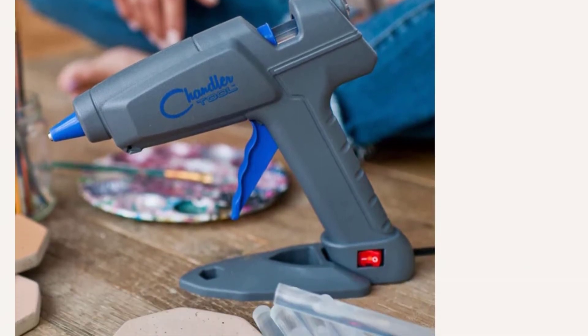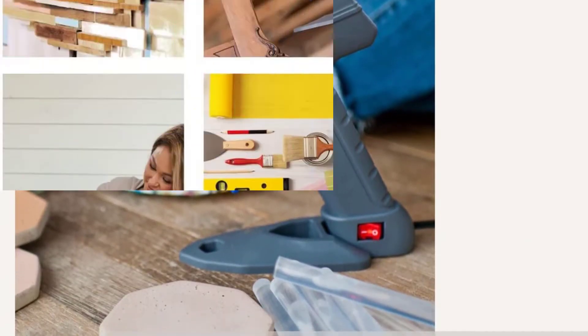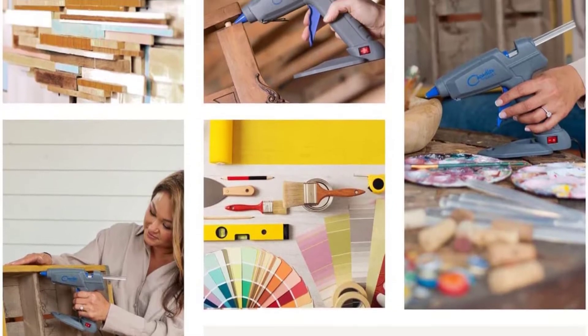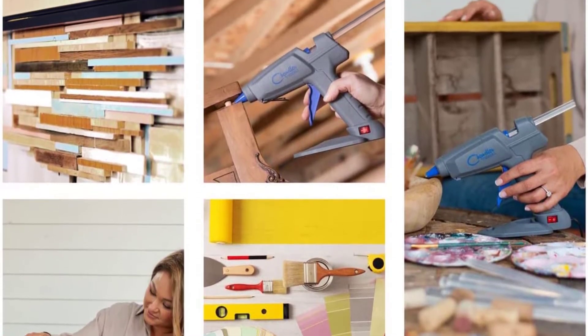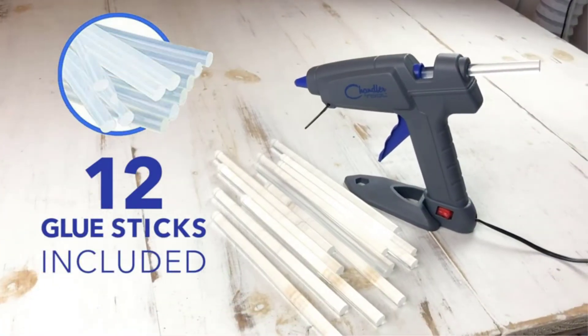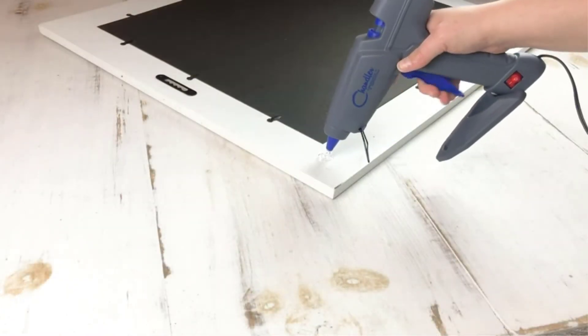Given that it has one of the lowest price tags available, the Chandler hot glue gun can be a fantastic choice if you're on a tight budget. Despite the lower price, it includes 10 glue sticks that are the typical size and thickness of 7/16 inches.